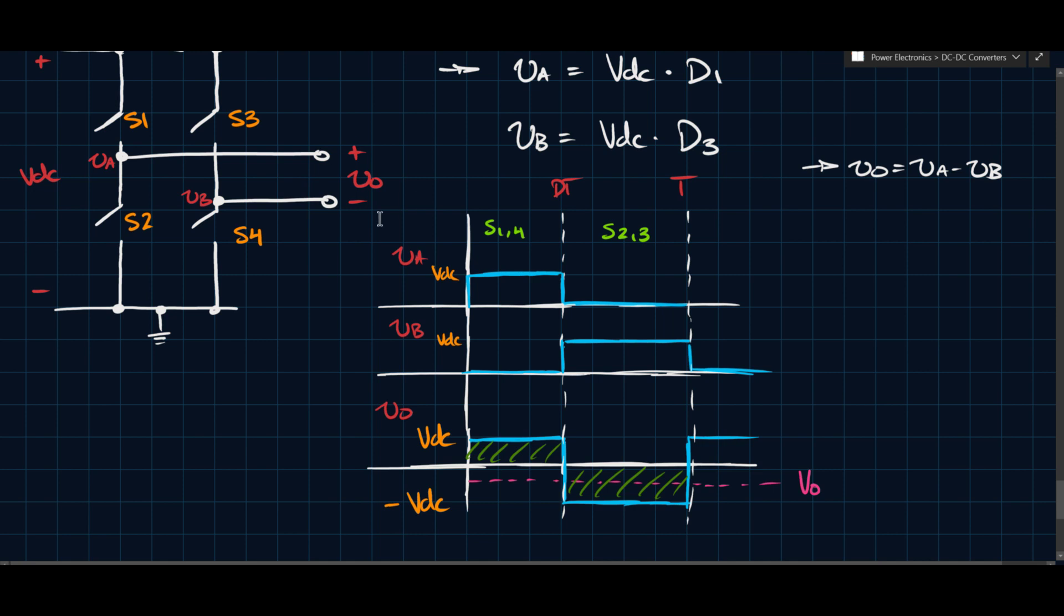Otherwise, there are simpler ways to achieve this type of function. You don't need four switches to do something like this. You can do something like, you can use, let's say if you only need a positive voltage and a positive current, you can achieve that with like a half-bridge topology, which is only two switches.